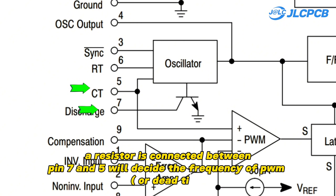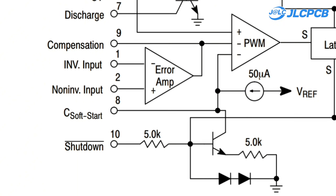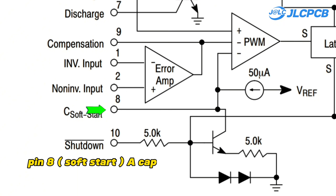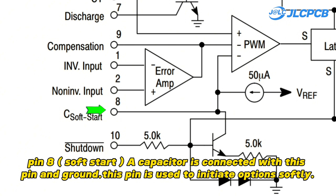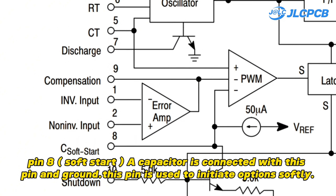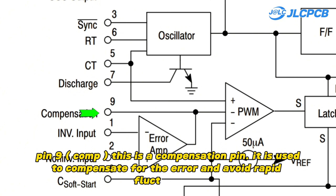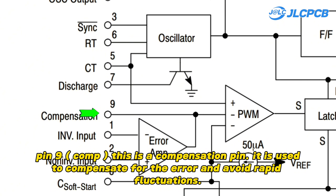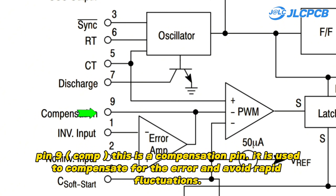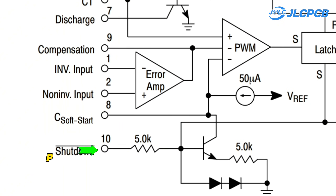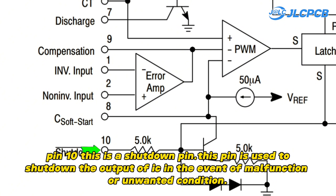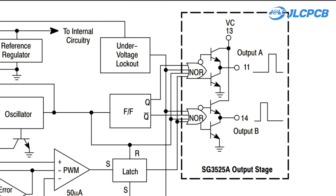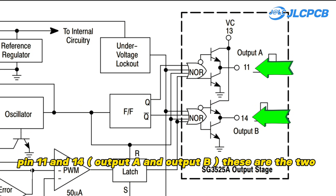Pin 7 is used to determine the dead time for the IC. A resistor connected between pin 7 and pin 5 will decide the frequency of PWM or dead time. Pin 8 — a capacitor is connected with this pin and ground; this pin is used for soft-start options. Pin 9 is a compensation pin used to compensate for error and avoid rapid fluctuation. Pin 10 is a shutdown pin, used to shut down the IC output in the event of malfunction or an unwanted condition.